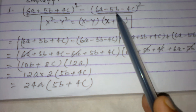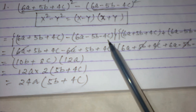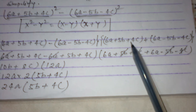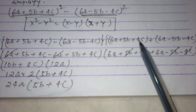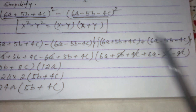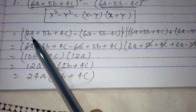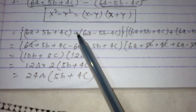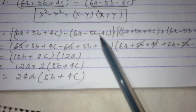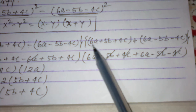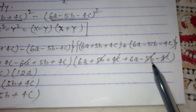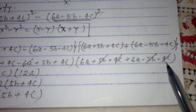Minus, in place of y we have 6a - 5b - 4c. So (x - y) becomes: 6a + 5b + 4c minus (6a - 5b - 4c), which gives us 6a + 5b + 4c - 6a + 5b + 4c. For (x + y): 6a + 5b + 4c plus 6a - 5b - 4c.